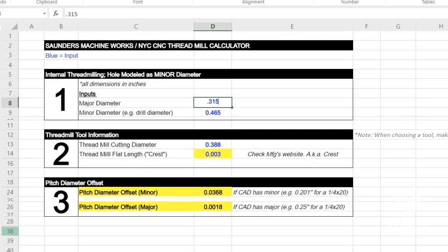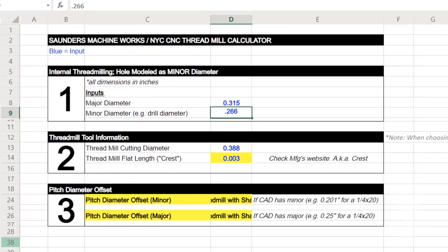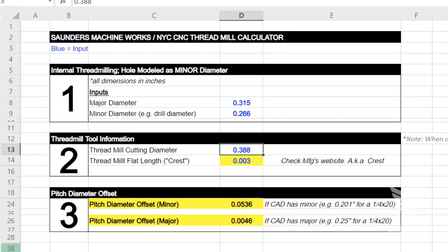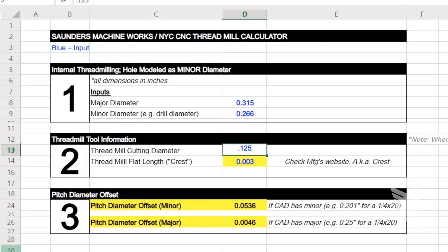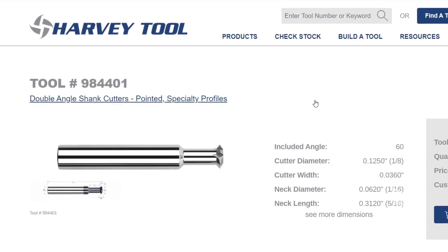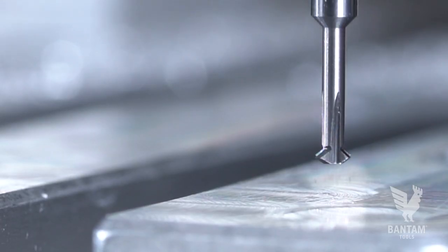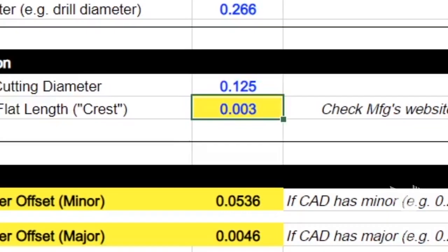Enter the major and minor diameters into the calculator. Major is our given number, 8mm. Minor is also a number given from Fusion. Now enter the thread mill diameter which can be found on the manufacturer's website along with the flat or crest. We're actually going to use a double angle shank cutter from Harvey that's ground to a fine point but there will still be some flat so we'll enter one thousandth of an inch to start.